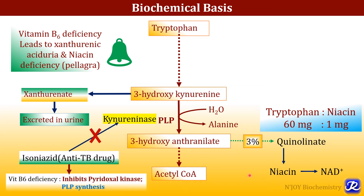In addition, the anti-tubercular drug isoniazid also leads to xanthuranic aciduria and niacin deficiency because isoniazid precipitates vitamin B6 deficiency by inhibiting the enzyme pyridoxal kinase, which is required for pyridoxal phosphate synthesis. So when the patient is given isoniazid for treatment of tuberculosis, it inhibits the synthesis of pyridoxal phosphate and inhibits the activity of kynureninase, precipitating vitamin B6 deficiency which leads to both xanthuranic aciduria and pellagra-like symptoms. That is why when isoniazid is prescribed, pyridoxine is also given to the patient.